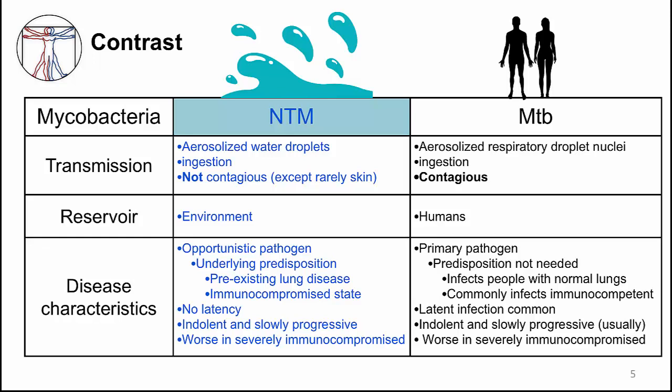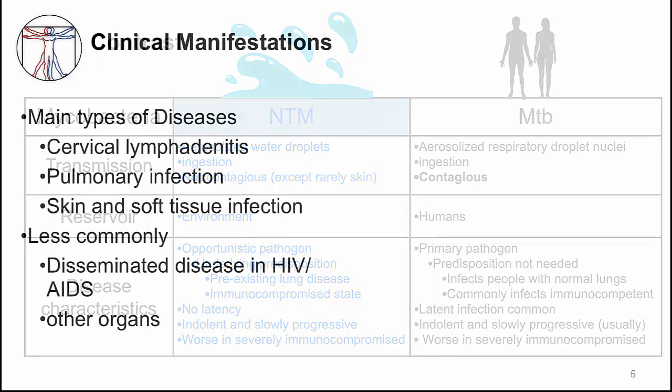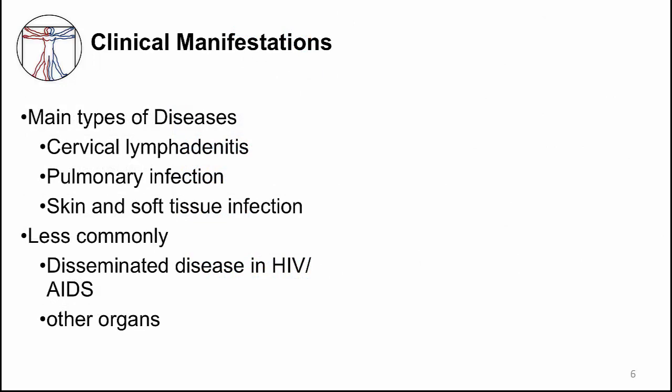There are some similarities between NTM and MTB. Both are indolent, slowly progressive diseases and are worse in a severely immunocompromised host. The three main clinical manifestations seen with NTM infections in immunocompetent people are cervical lymphadenitis, pulmonary infections, and skin and soft tissue infections. A very important but less common clinical manifestation is disseminated disease in HIV-AIDS patients. Of note, NTM can potentially infect any organ, just like MTB.